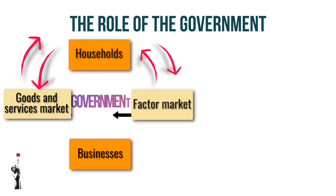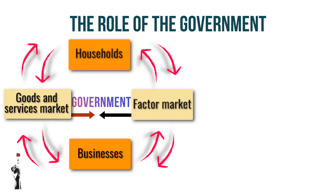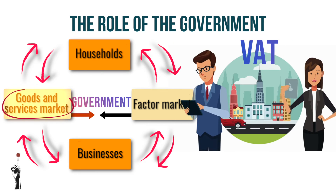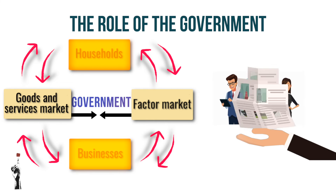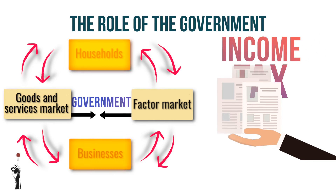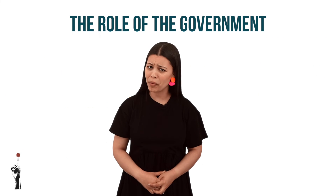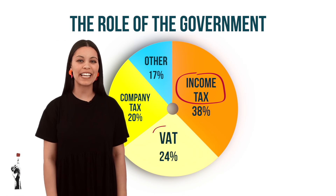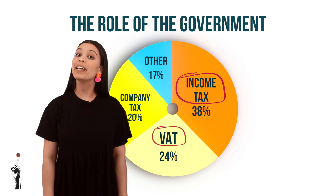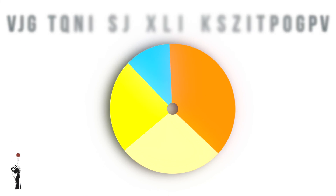The government plays an important role in the circular flow as well. The government receives tax in the form of VAT for goods and services that are bought and sold. Secondly, businesses and households also have to pay tax to the government in the form of income tax, and it's not always a pleasant thing to pay tax. These are two main sources of income which governments receive, though as you learnt in Grade 8, there are many sources of income.